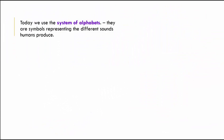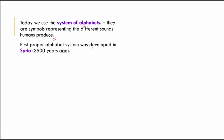From then to today, we use the system of alphabets — symbols representing the different sounds that humans make. For example, 'A' stands for 'a', 'B' stands for 'bur'. The different alphabets we use today represent the sounds we make. The first proper alphabet system was developed in Syria nearly 3,500 years ago, and today we have nearly 50 different alphabet systems used in the world.